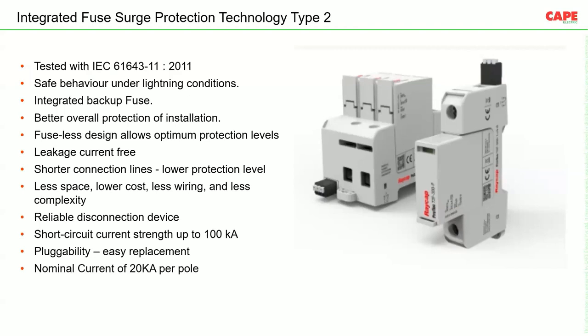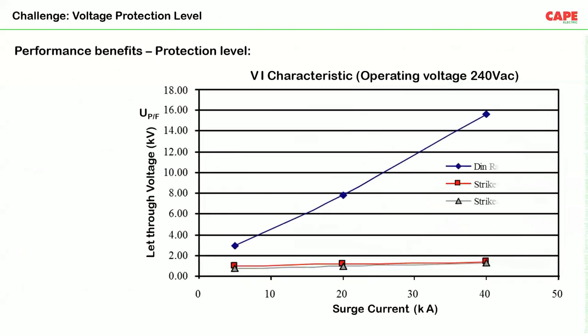These Type 2 SPDs have a nominal current of 20 kA per pole and a response time of 25 nanoseconds. The performance graph shows that even with increasing surge current, the let-through voltage of the SPD remains very low — similar to bus-bar mounted SPDs. SPDs with integrated backup protection have similar performance characteristics, with very low let-through voltage and excellent effective voltage protection levels.